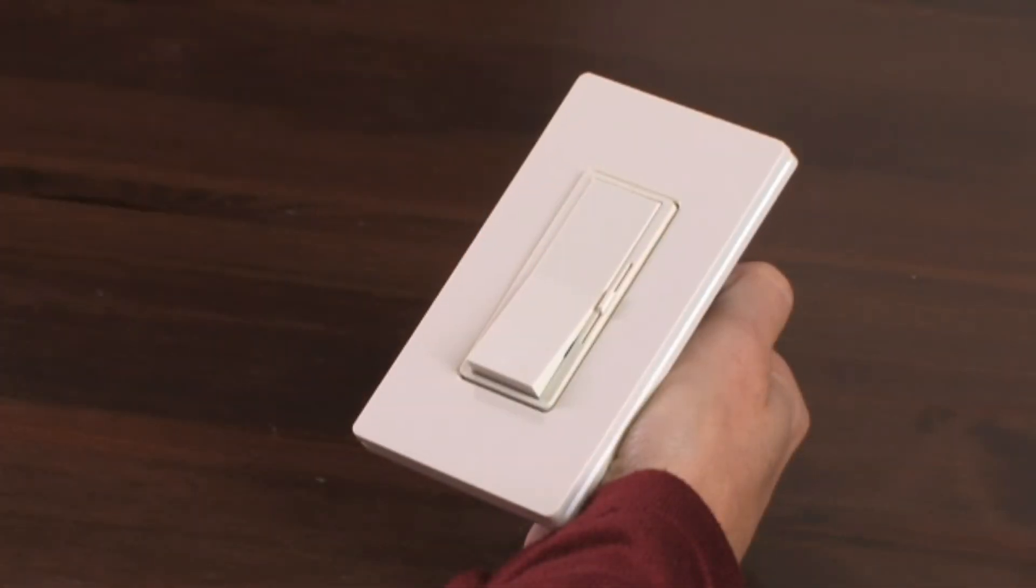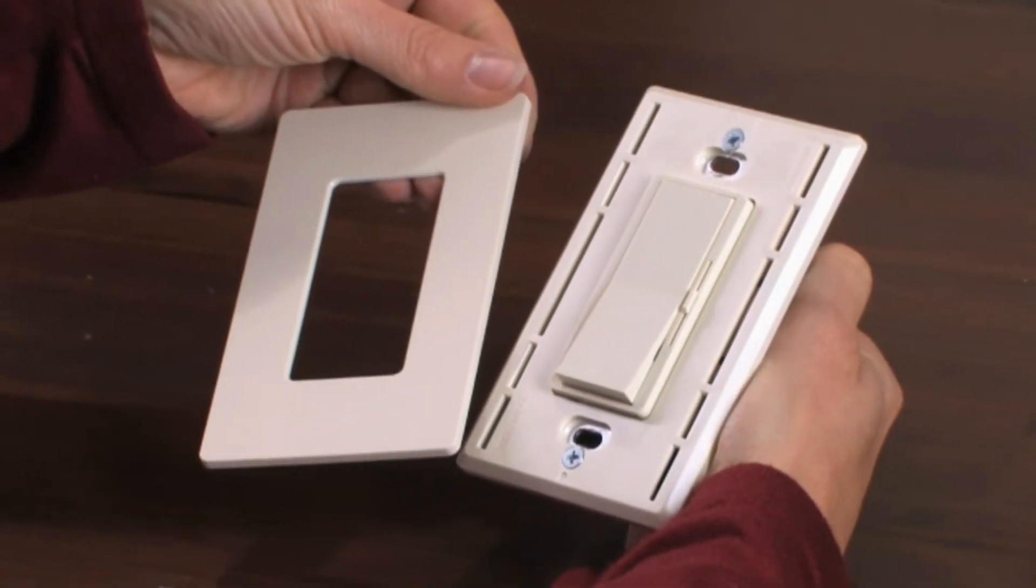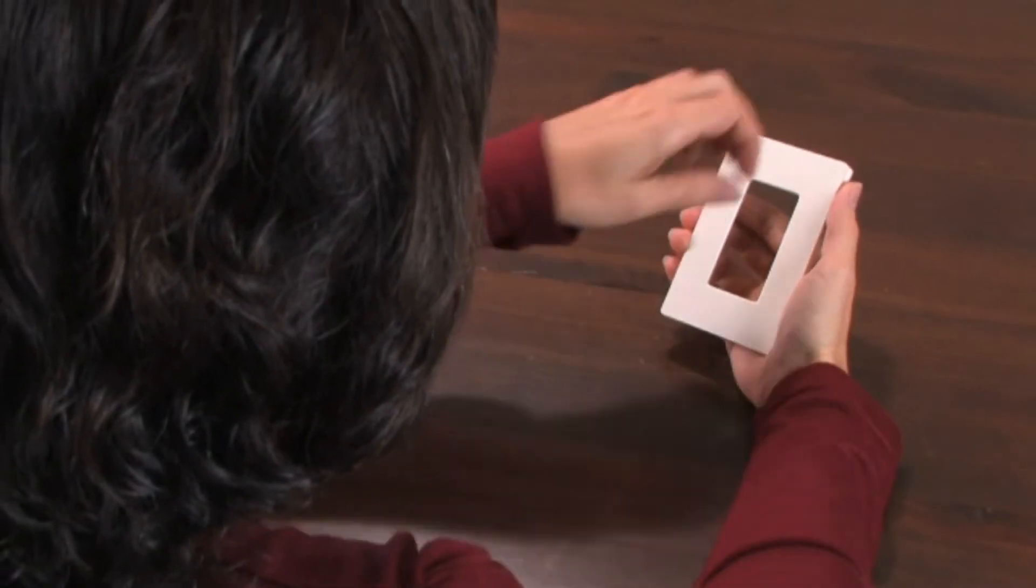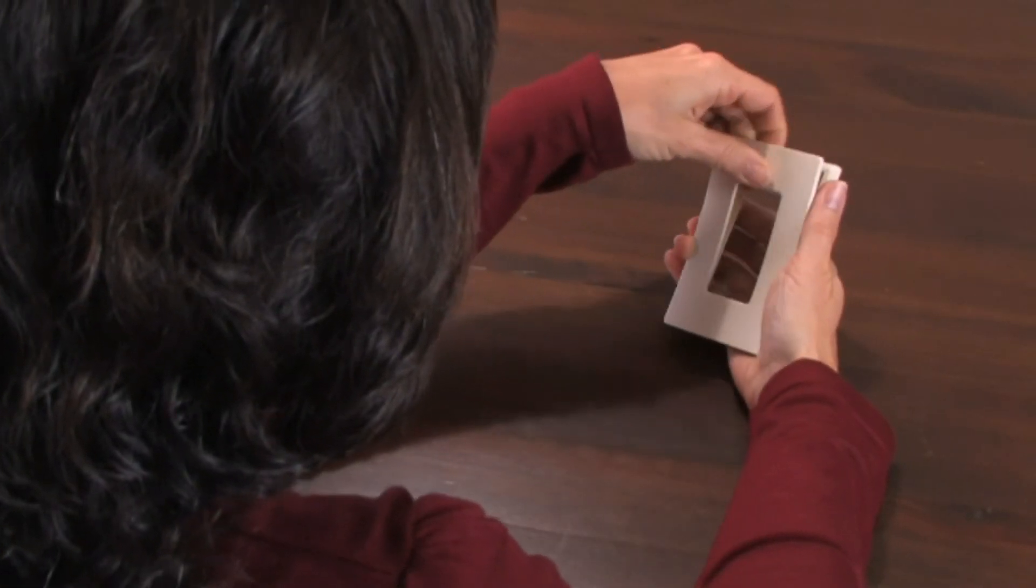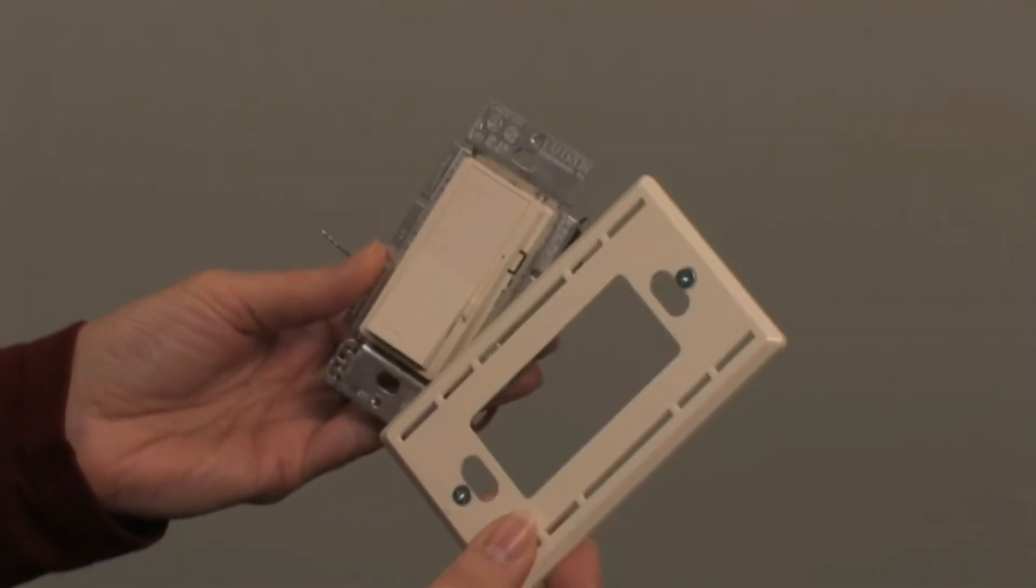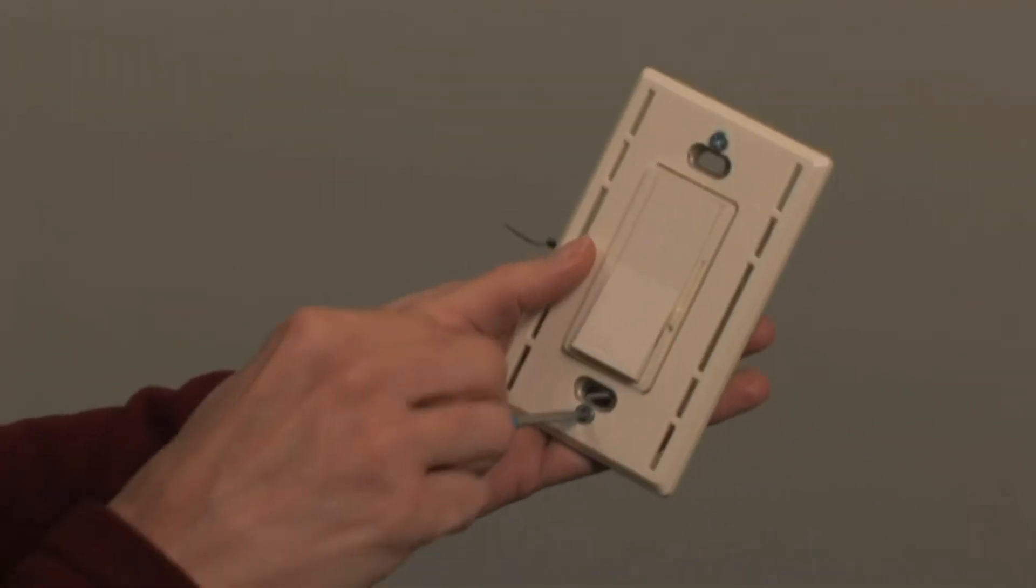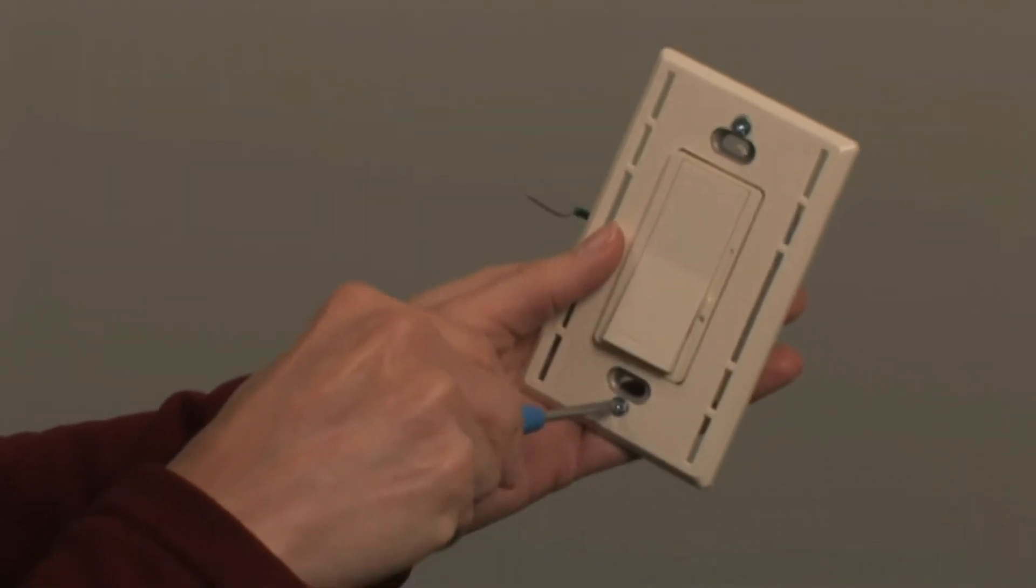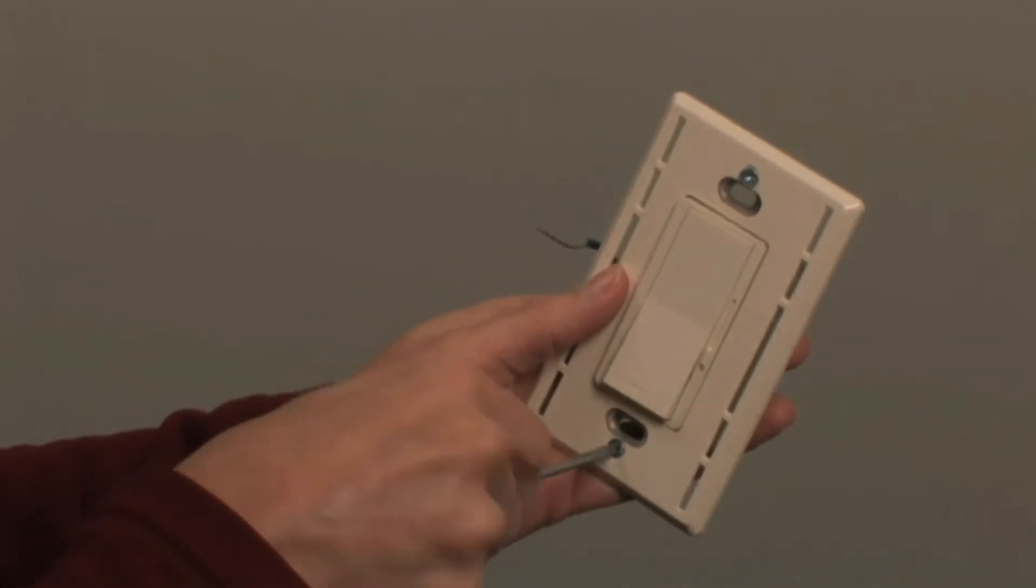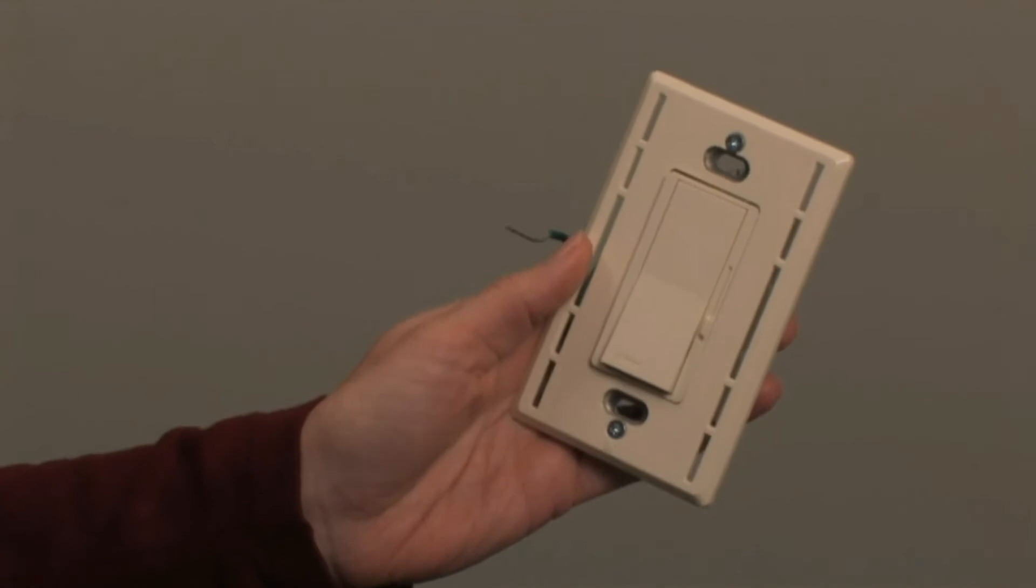If your dimmer came with a wall plate attached to it, carefully remove the wall plate by grasping the top and pulling it forward. If you purchased your wall plate separately, carefully pull the front and back pieces apart. A trick you might find useful is to attach the back piece, called the wall plate adapter, to your dimmer before installing it. This helps ensure a straight, clean installation, but you can also attach the wall plate adapter after installing your dimmer.